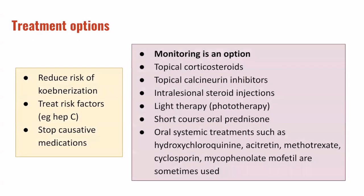In terms of a treatment ladder, monitoring is certainly an option. Topical treatments such as topical corticosteroids and topical calcineurin inhibitors are often first-line options. Intralesional steroid injections may be suitable for very localized lichen planus lesions. Light therapy in the form of phototherapy is often used. There are also oral options including a short course of oral prednisone, which is a systemic steroid, as well as other systemic treatments including hydroxychloroquine, acitretin, methotrexate, cyclosporine, mycophenolate mofetil, and others.